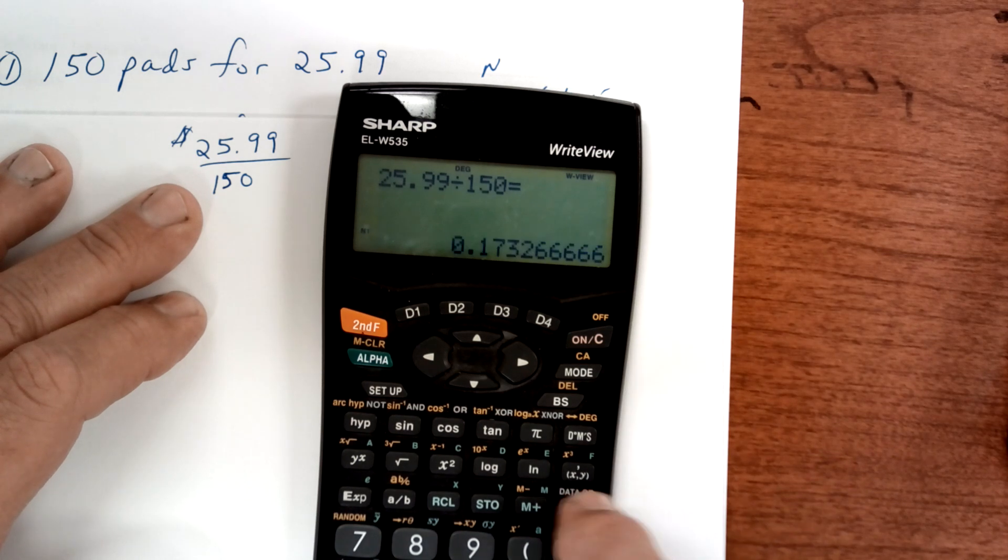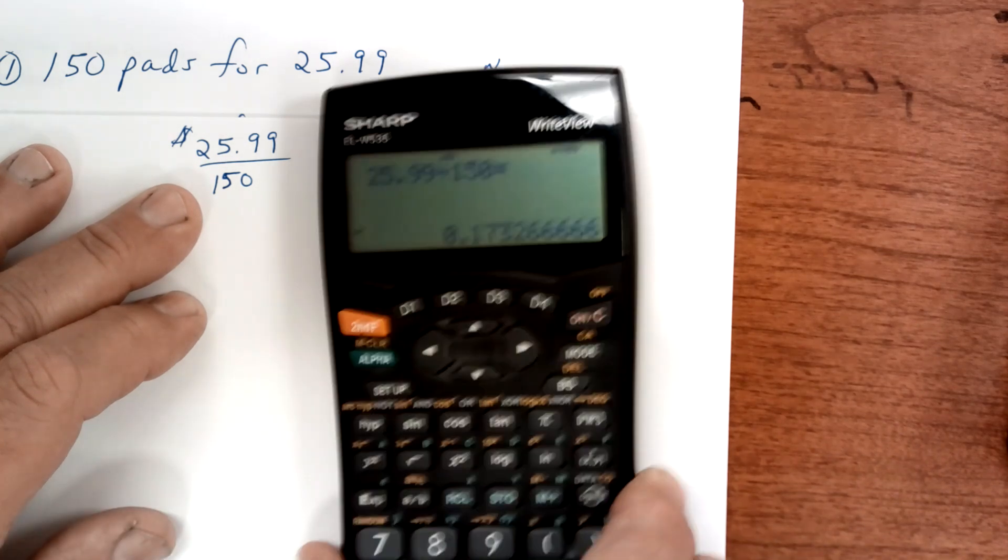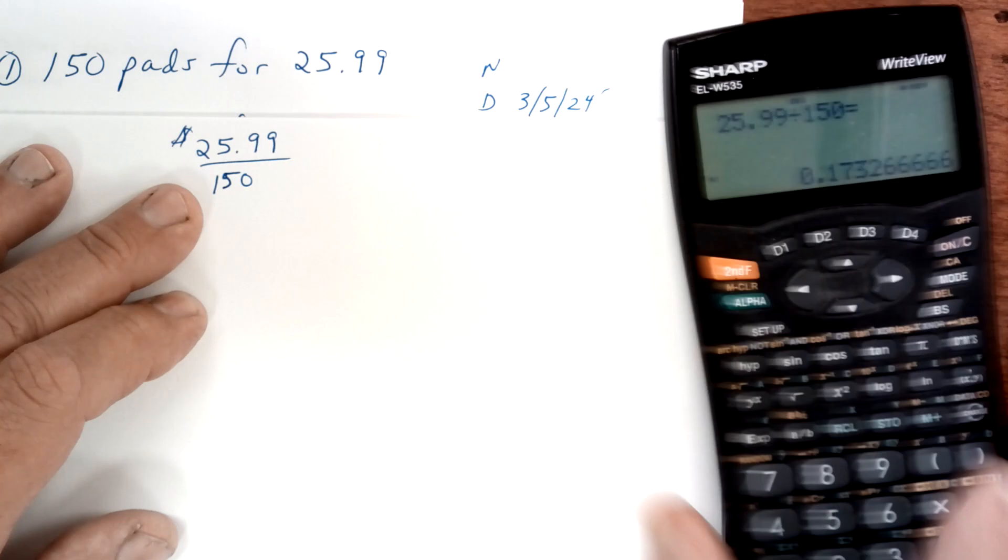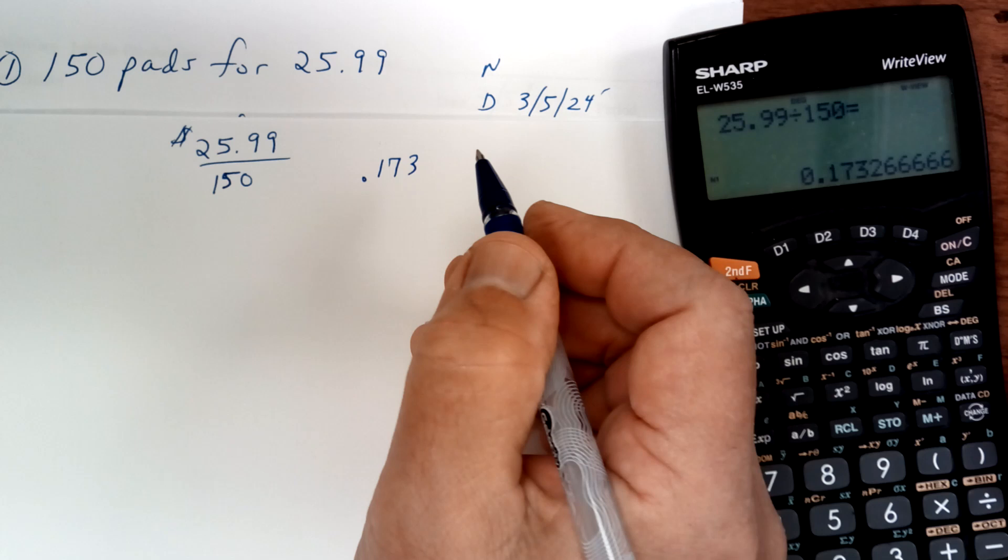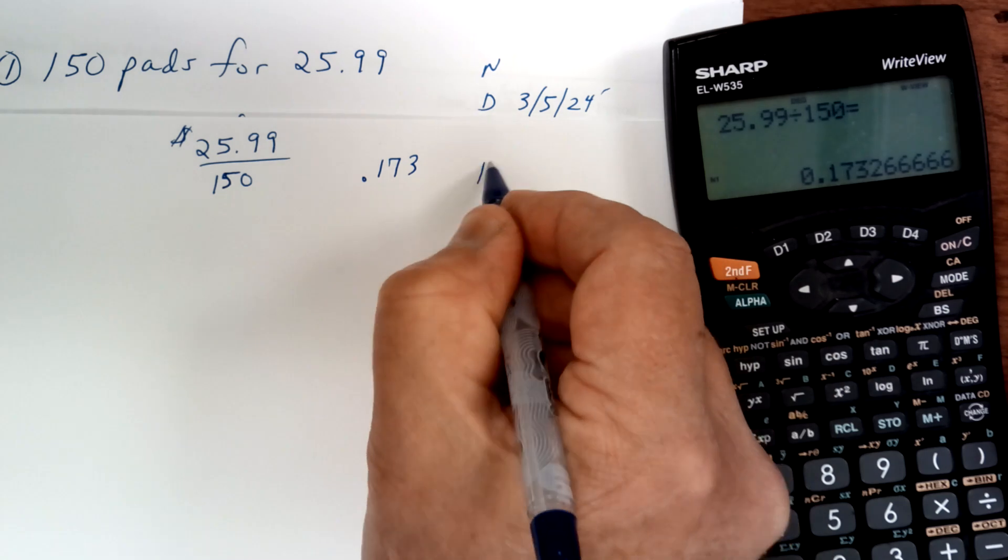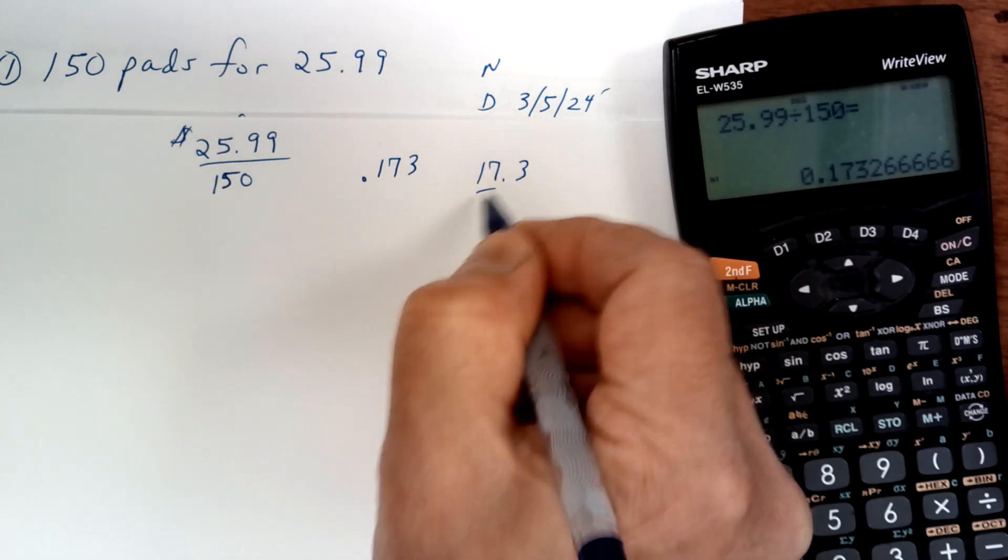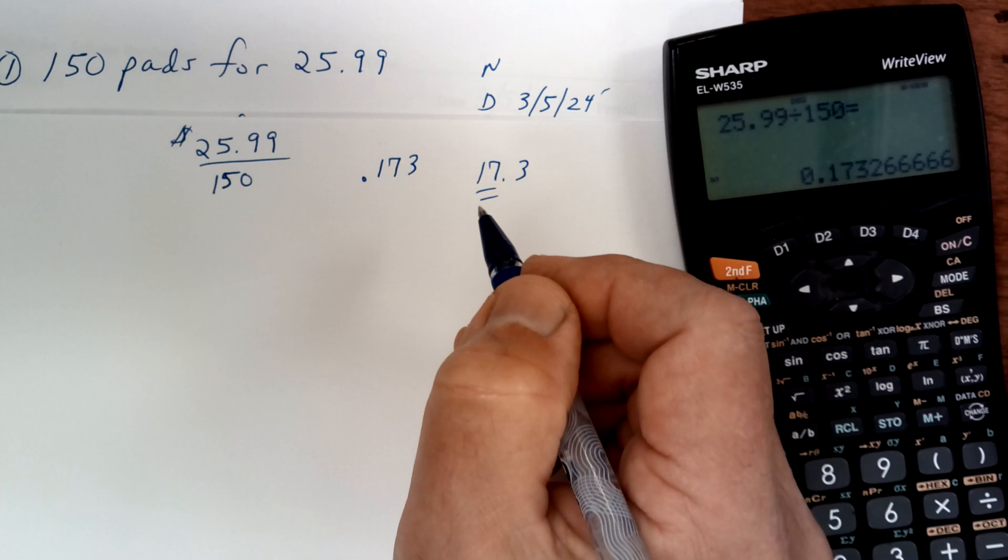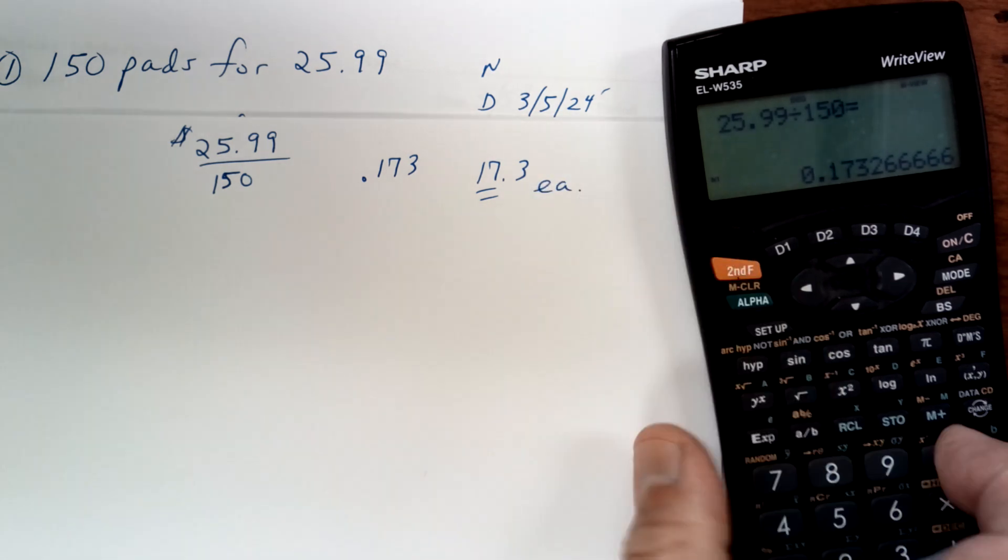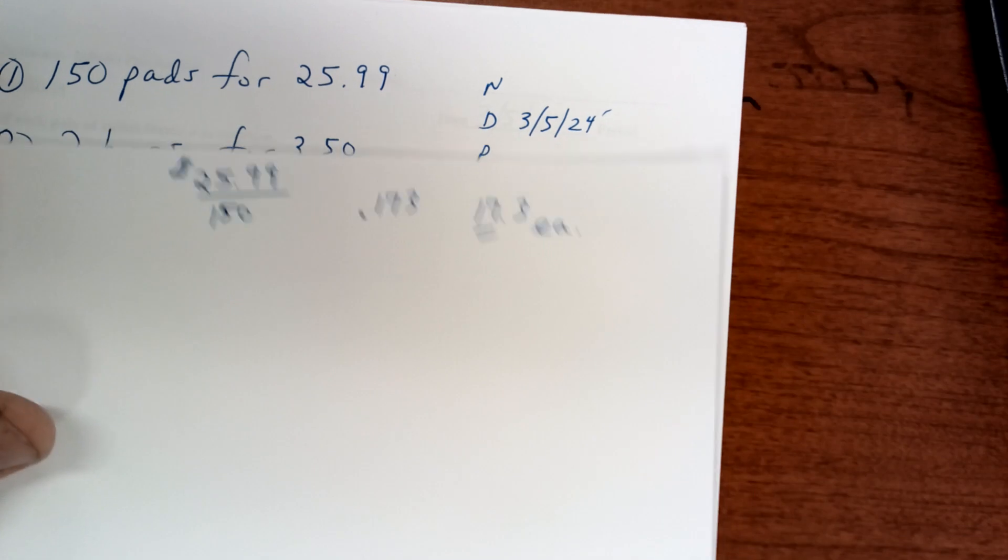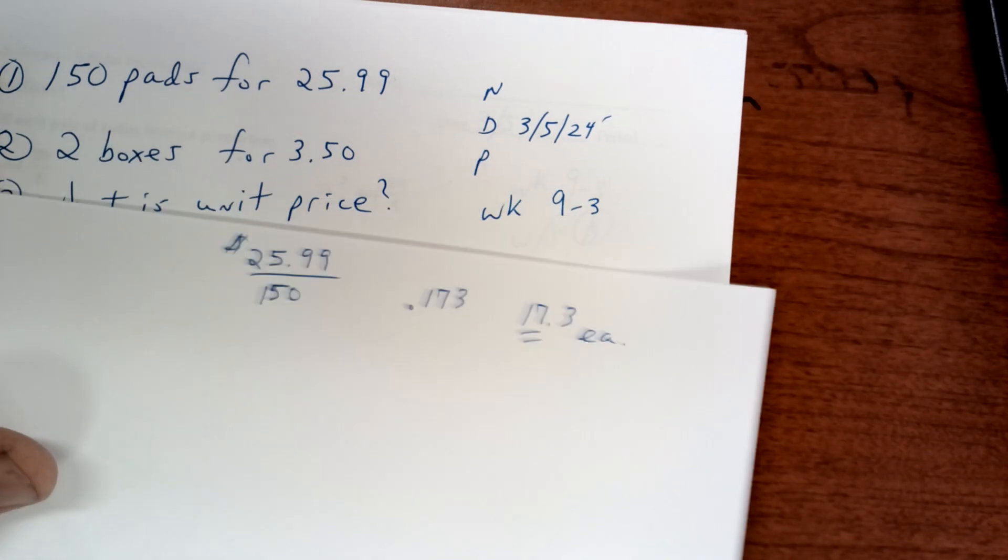This gives you a unit price of 17.3 cents, or 0.173, which is about 17.3 cents, so it's about 17 cents each. That is the unit price. That way you can compare apples to apples and oranges to oranges.